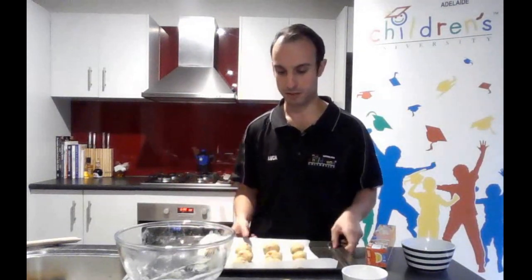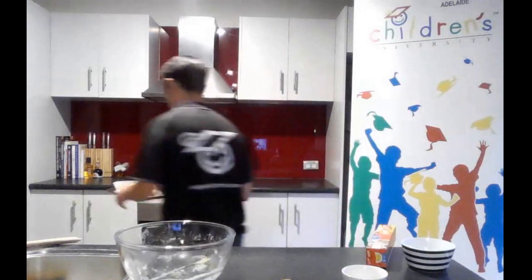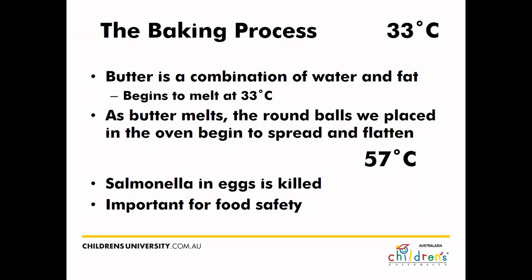We've got the balls ready and we're going to put them straight into the oven now. The cooking time is about 12 minutes; the oven is set to 190 degrees Celsius. Our ingredients are now in the oven, surrounded by 190-degree heat, so lots of energy from the oven is going into our mixture. As the temperature raises, different things are going to start happening.